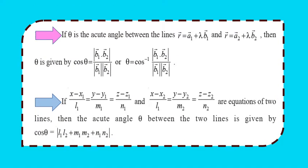Next, if θ is the acute angle between two lines r = a₁ + λb₁ and r = a₂ + λb₂, then cos θ = |b₁·b₂| / (|b₁| × |b₂|), or θ = cos⁻¹(|b₁·b₂| / (|b₁||b₂|)). In Cartesian form, if the lines are (x − x₁)/l₁ = (y − y₁)/m₁ = (z − z₁)/n₁ and (x − x₂)/l₂ = (y − y₂)/m₂ = (z − z₂)/n₂, then cos θ = |l₁l₂ + m₁m₂ + n₁n₂|. Pause and note down these points.